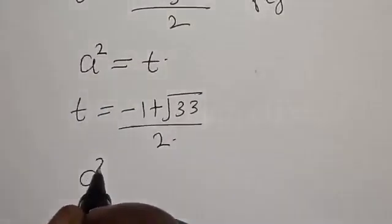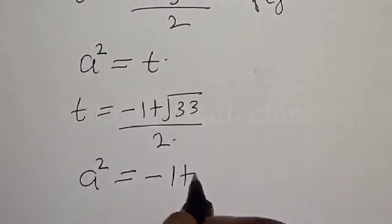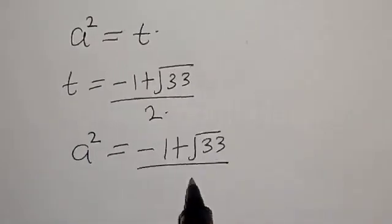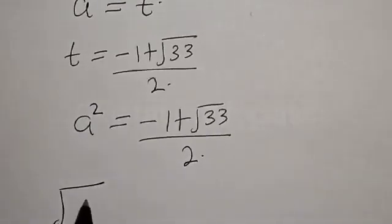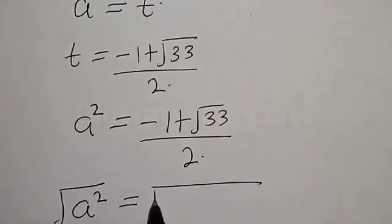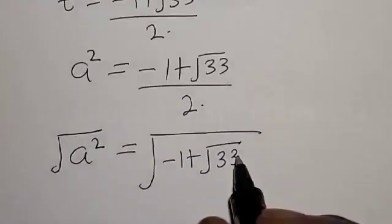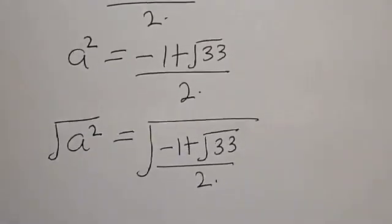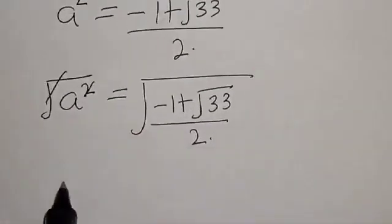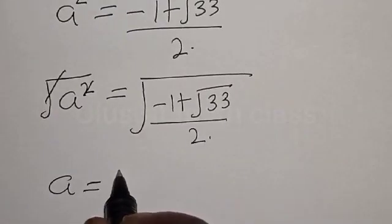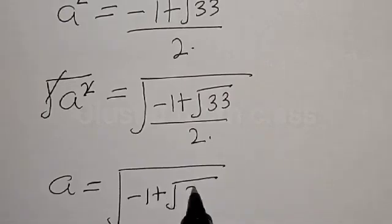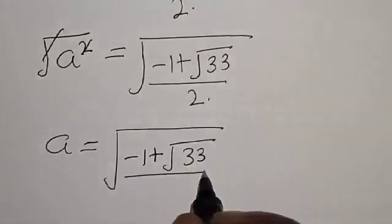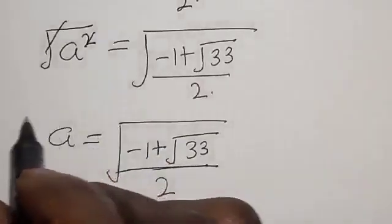Remember that we said a squared equals t, and our t is (negative 1 plus square root of 33) divided by 2. So a squared equals (negative 1 plus square root of 33) divided by 2. Taking the square root of both sides, our final answer is a equals square root of (negative 1 plus square root of 33, divided by 2).